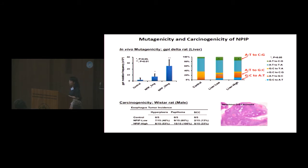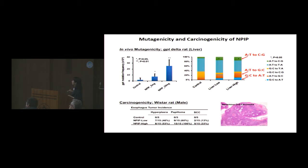This slide shows the mutagenicity and carcinogenicity of NPIP. The upper panel shows the in vivo mutagenicity of NPIP using the GPT-delta transgenic rat model. This compound induced mutation frequency in the liver in a dose-dependent manner. The mutational pattern in the liver shows that G:C to A:T, A:T to G:C, and A:T to C:G mutations were clearly increased compared to control animals. The lower panels show the carcinogenicity of NPIP — it induced papilloma and squamous cell carcinoma in rats.